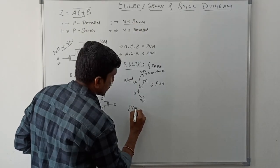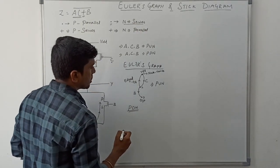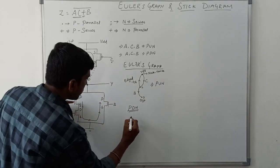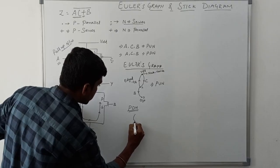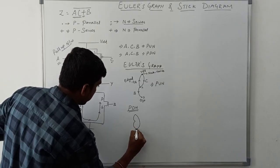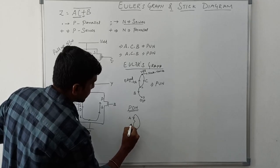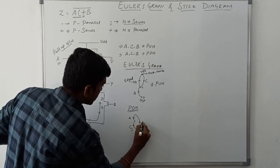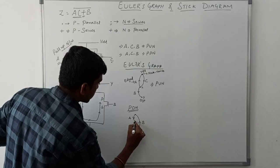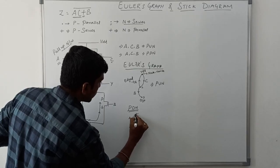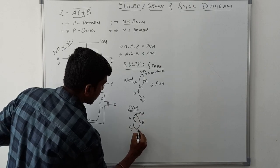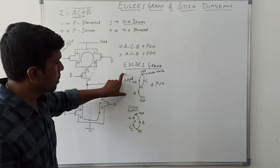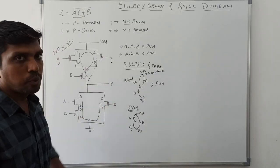Now I am going to draw the pull-down network Euler's graph. In this graph we follow the same order A, C, B. This edge is named A, this one is C, and this one is B. This node connects to output, and this one connects to VSS ground. This is the Euler's graph for the pull-up network and this one is the Euler's graph for the pull-down network.